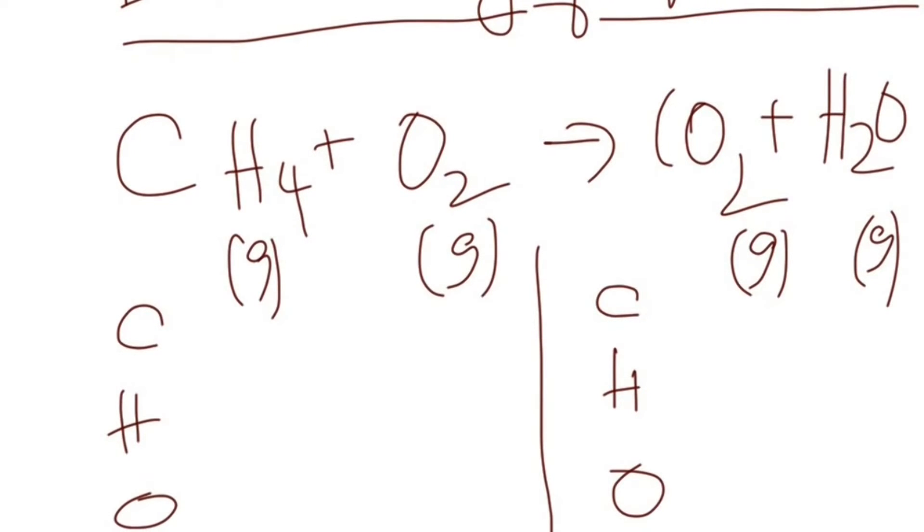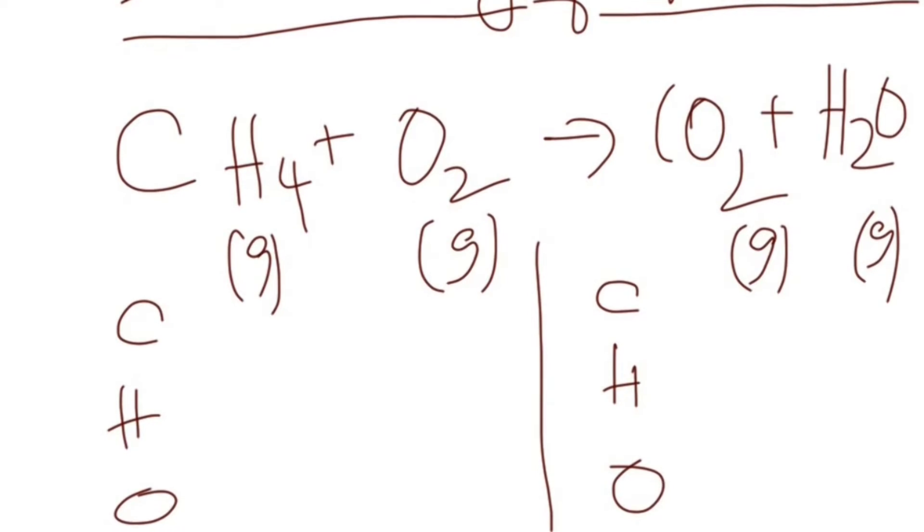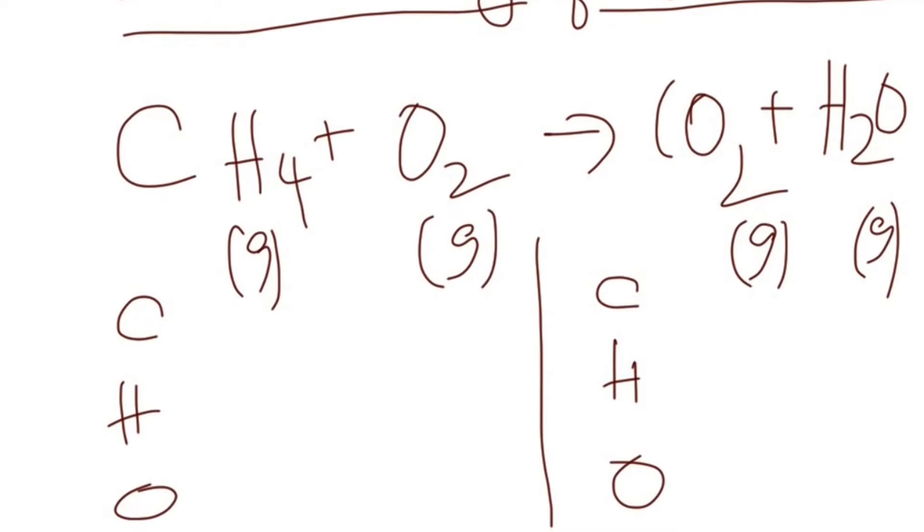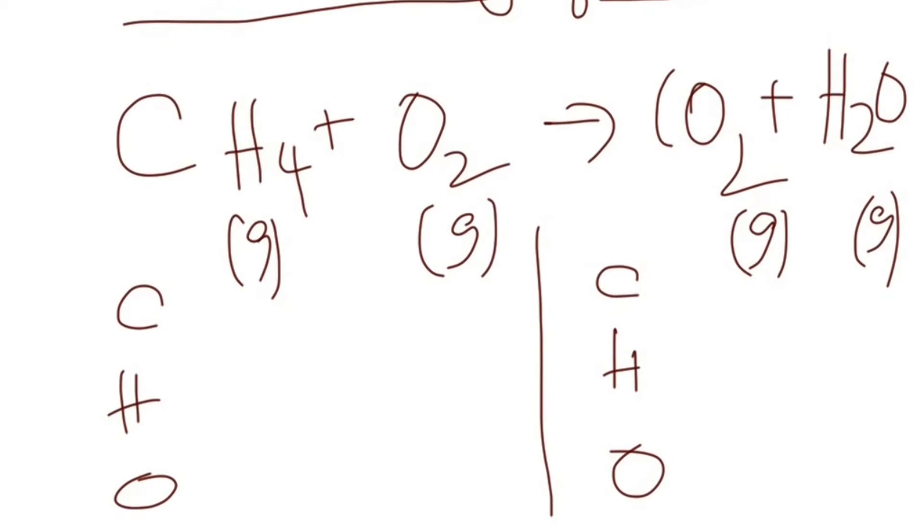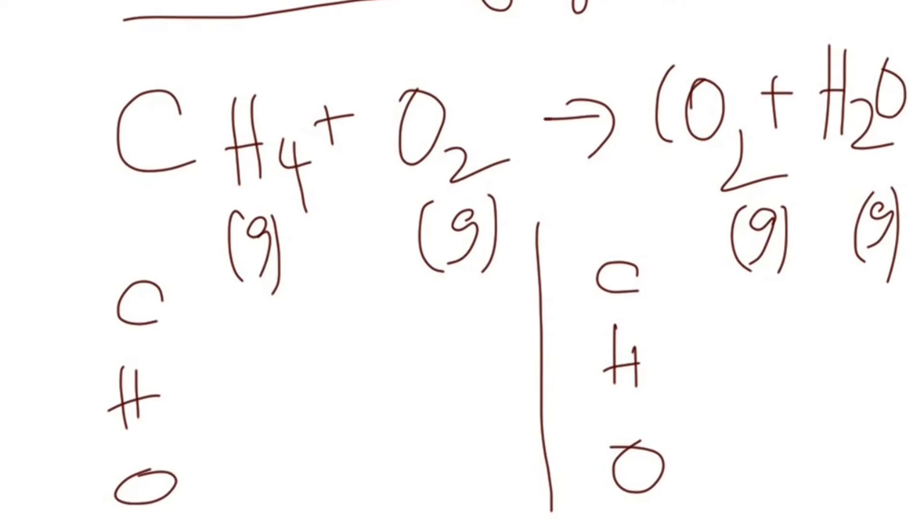Now what we have to do next in order to do a simple balancing is write the elements that we are planning to balance on the left side. I have written carbon, hydrogen, oxygen. Similarly on the right side, carbon, hydrogen, oxygen.